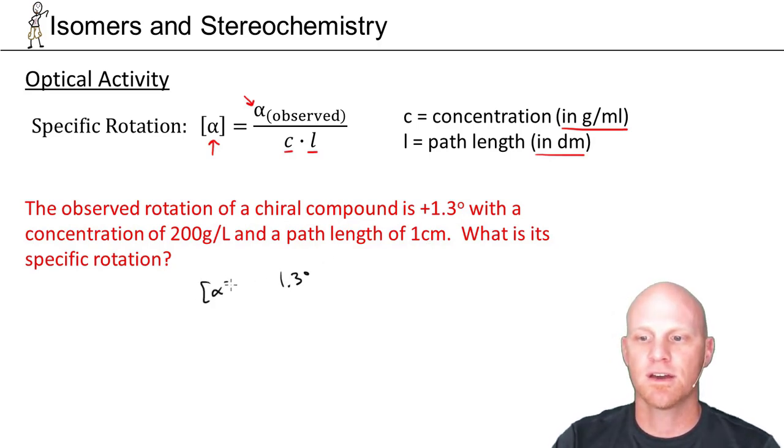That specific rotation is equal to the observed rotation, 1.3°, divided by the concentration, but not in grams per liter, but grams per milliliter. 200 g/L would be 0.2 g/mL.